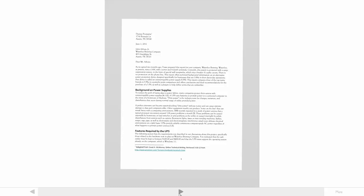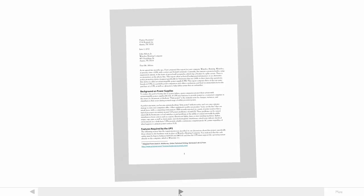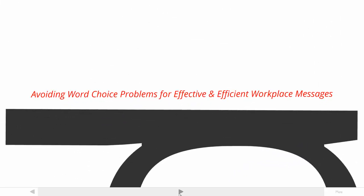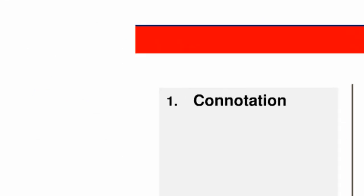That means the writer has to increase the reader's readiness by providing both informative and persuasive information. My task in this tutorial is to explain how to avoid word choice problems that interfere with getting readers to accept a message. I also hope to persuade you that avoiding style problems is important in this report. Let's get started.